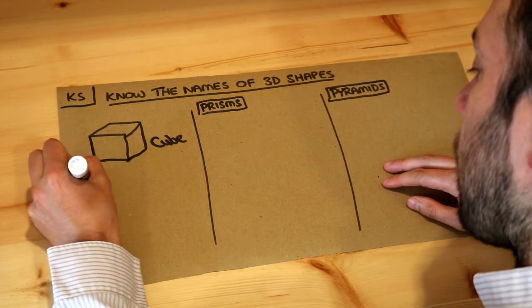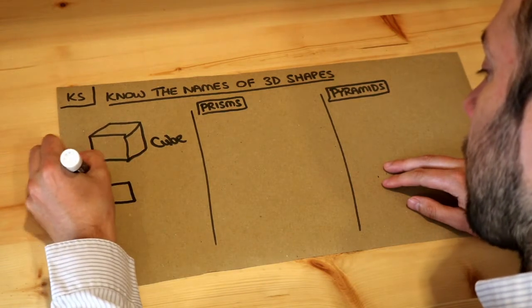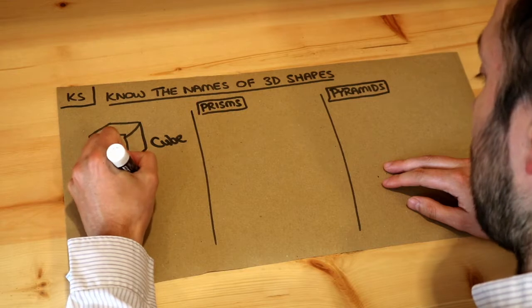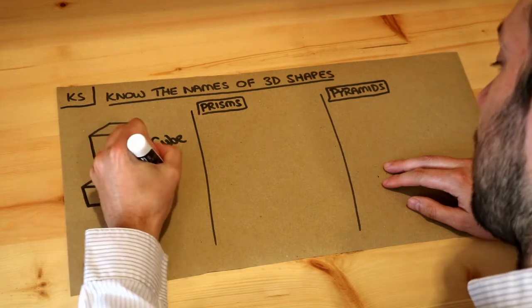Now if some of the faces are rectangles like this, some might be squares as well, then that's known as a cuboid.